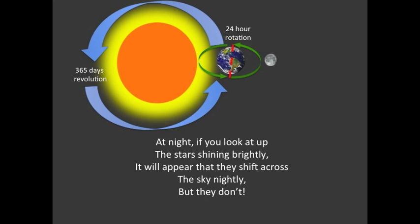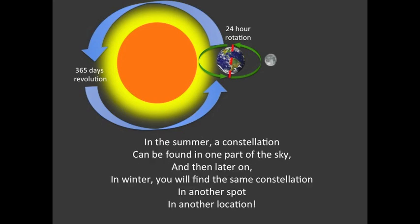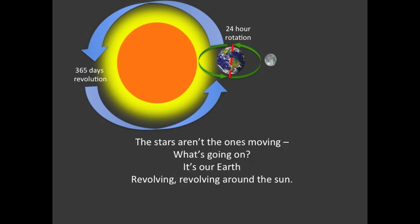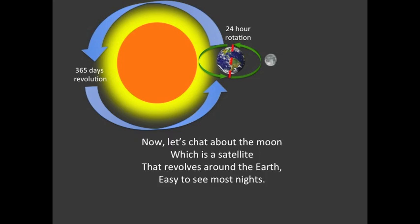At night, if you look up at the stars shining brightly, it will appear that they shift across the sky nightly — but they don't. In summer a constellation can be found in one part of the sky, and in winter you'll find the same constellation in another spot. The stars aren't the ones moving — it's our earth revolving around the sun.